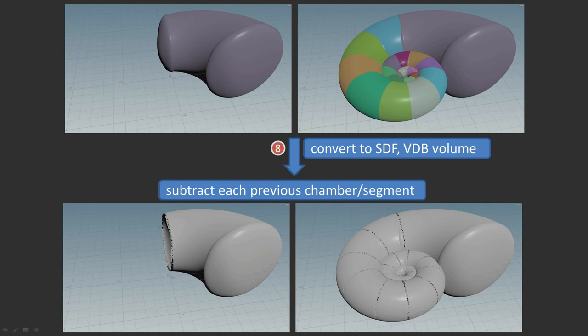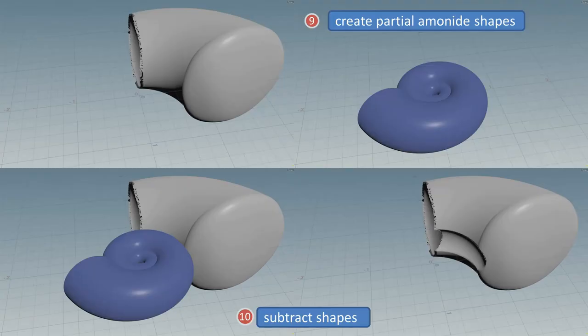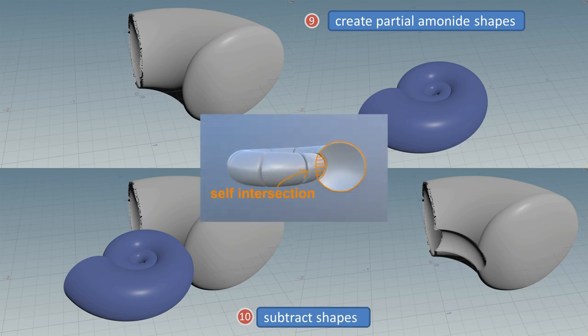The previous chamber segment is subtracted from the next following chamber. This is very similar to booleans when dealing with polygons, but here we are dealing with a volume representation. To create the self-intersections, the setup creates partial shapes of the ammonite that end at minimum one segment before the segment they are subtracted from.